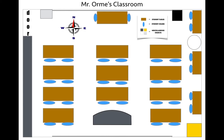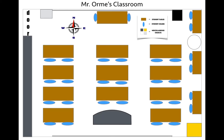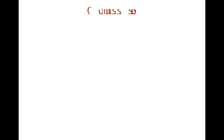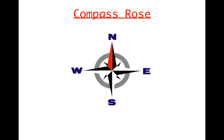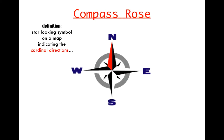We'll also be taking a look at a compass rose. The compass rose tells us the four basic directions of north, south, east, and west. The compass rose can be defined as a star-looking symbol on a map indicating the cardinal directions.